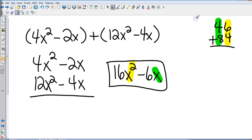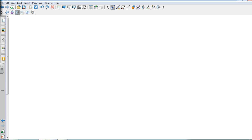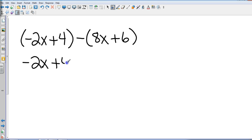So now let's look at a subtraction problem. OK now the subtraction problem changes the signs of everything in the parentheses. So I would rewrite this, negative 2x to negative 2x plus 4, then that's going to change that to a minus 8x and that's going to change that to a minus 6.